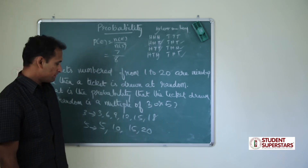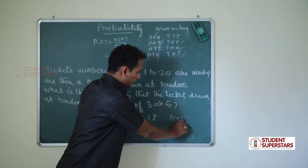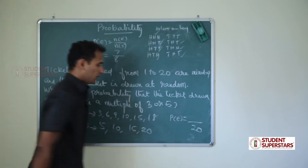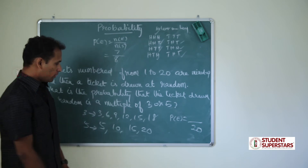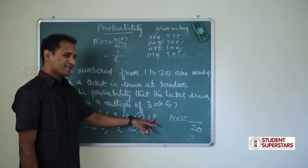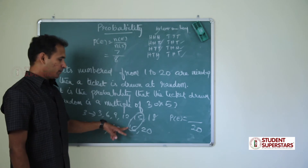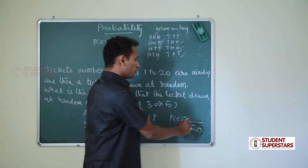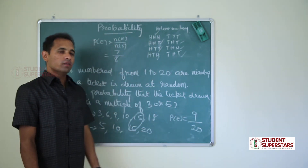Number of events by number of samples gives probability. Number of samples is 20. For number of events — either multiple of 3 or 5 — 15 is common to both. So we have 6 multiples of 3 and 4 multiples of 5, but 15 comes twice, giving us 9 unique numbers. So the answer is 9 by 20.